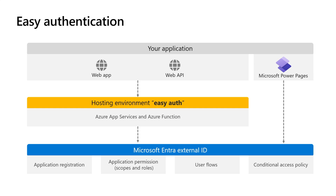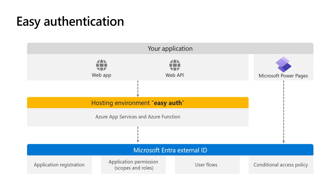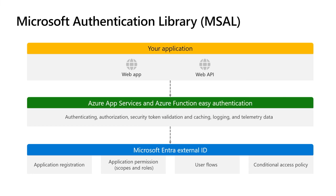For customers that have already taken advantage of hosting their web applications and web APIs on Azure App Service or Azure Functions, we made this even easier with Easy Auth. Easy Auth provides built-in authentication and authorization capabilities. Microsoft Power Pages also includes integrated authentication features for your Power Pages application. Microsoft Entra External ID streamlines the process of integrating authentication and authorization into your application, utilizing the MSAL library and Easy Auth to establish a robust authentication and authorization framework.